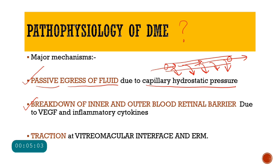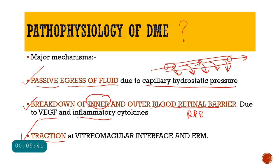Mechanism two is the breakdown of the inner and outer blood-retinal barriers. The inner retinal barrier is formed by endothelial cells and their tight junctions of capillaries, while the outer blood-retinal barrier is formed by the retinal pigment epithelium. When these barriers break down due to inflammation in diabetic retinopathy and due to VEGF — vascular endothelial growth factor — fluid accumulates, leading to swelling of the macula and diabetic macular edema.